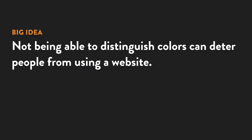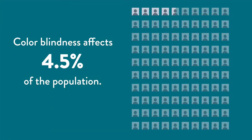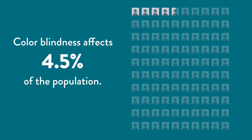Although most people who are colorblind wouldn't consider themselves to have a disability, not being able to tell apart certain colors can keep them from understanding and using a website. 4.5% of the population is colorblind, mostly males. It's not, as the name seems to imply, an inability to see color — they just happen to see colors differently than a person with normal vision.